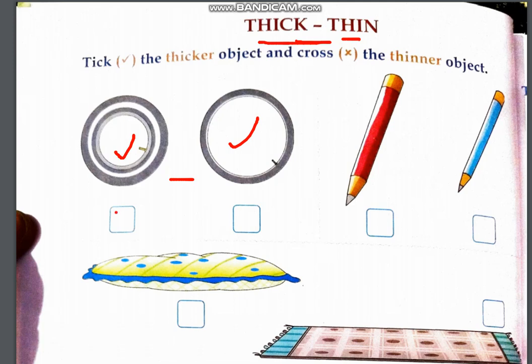So you have to tick the thicker ring. Next, thinner ring you cross. Next, the pencils: which one is thicker and which one is thinner? The first pencil is thicker, then tick it. The second one is thinner than the first pencil, then we will cross it. This is the pillow and this is the mat. The pillow is thicker than the mat, so we will tick the pillow and cross the mat.